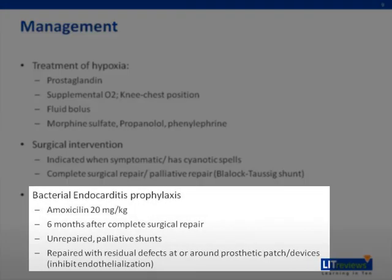Antibiotic prophylaxis against bacterial endocarditis is indicated for children with congenital heart defects. It is needed if TOF is unrepaired, if palliative shunts are in place, or if there are residual defects at or near prosthetic patches. For patients undergoing complete surgical repair, antibiotic coverage should be given for the six months following the procedure.